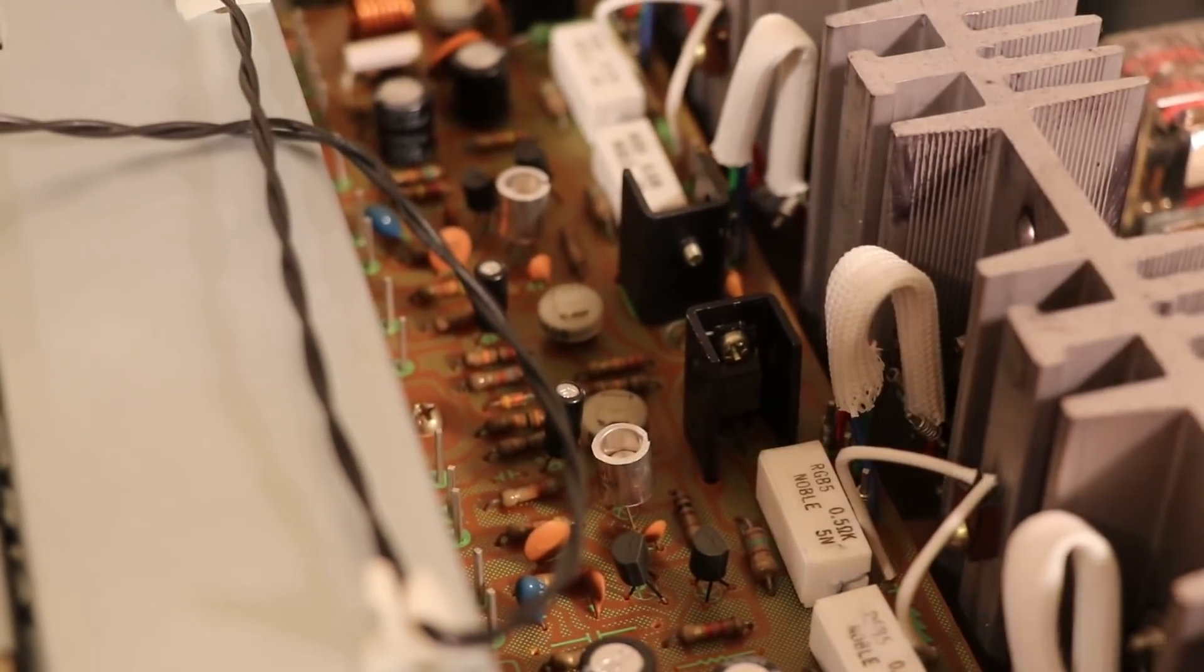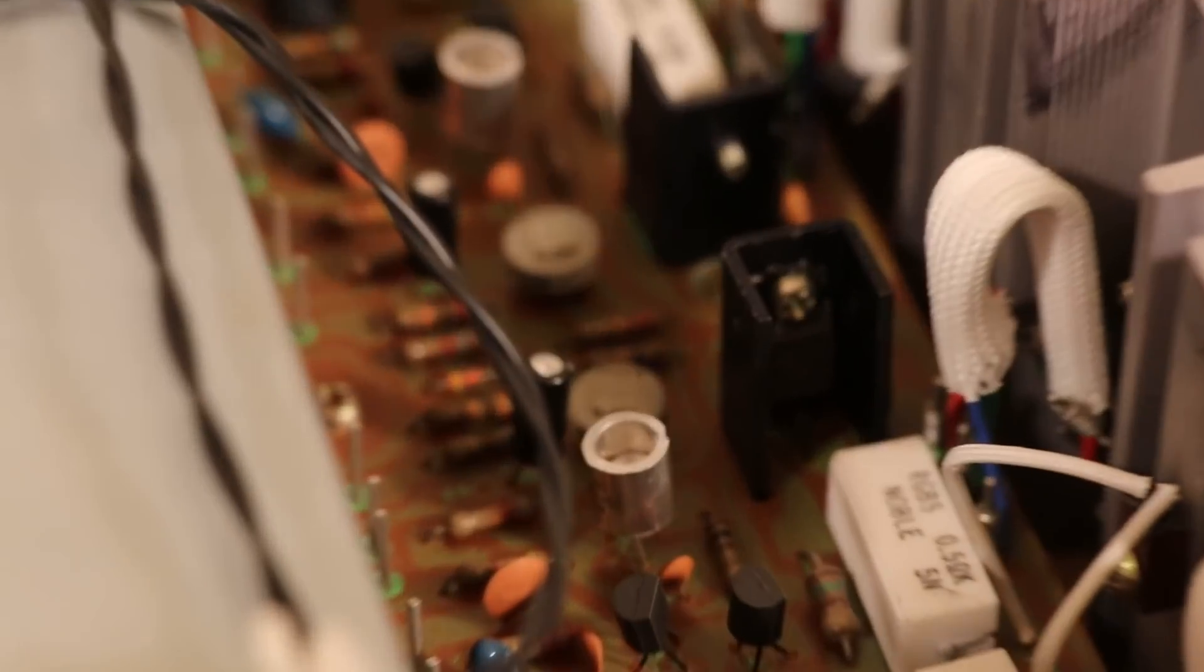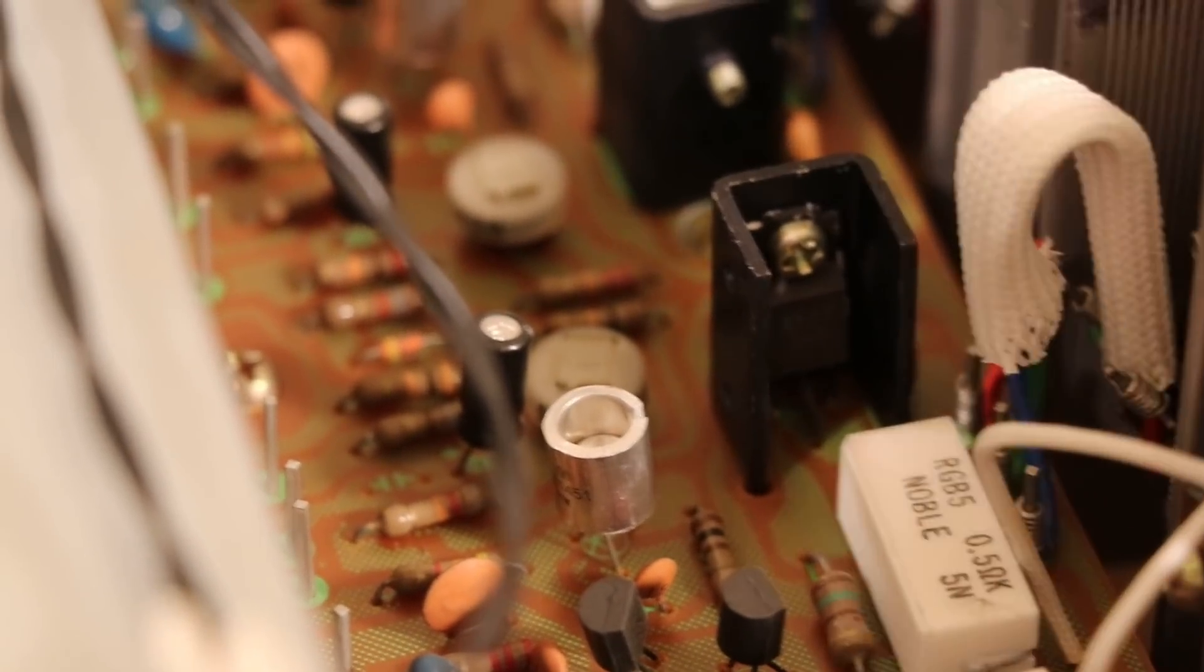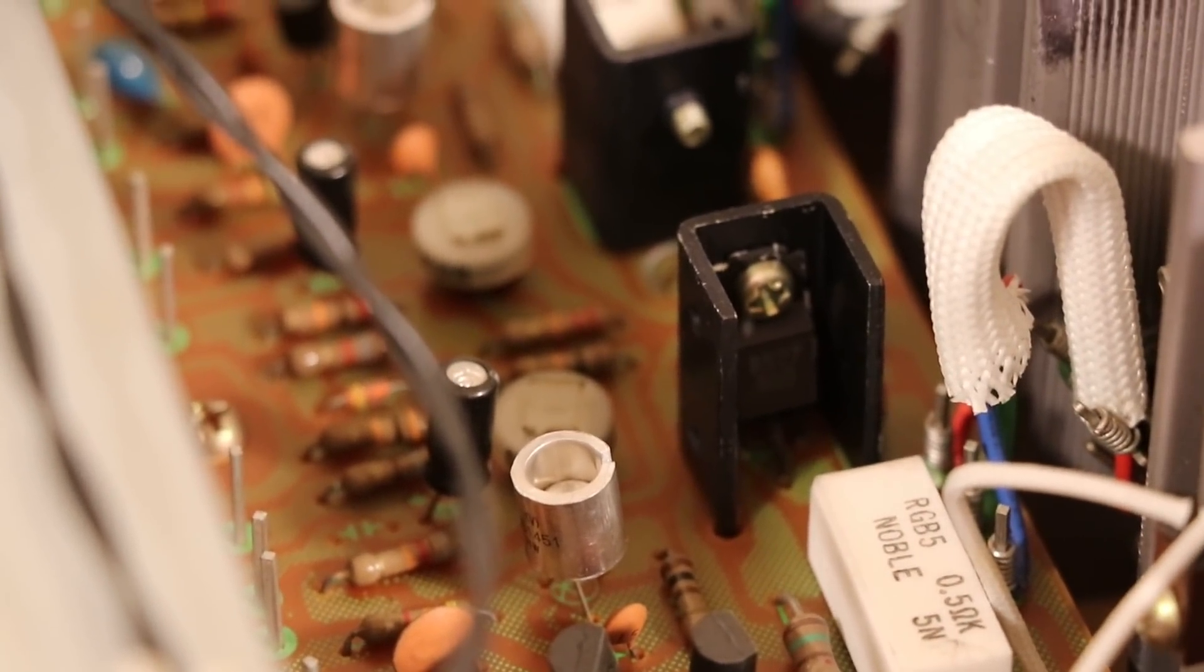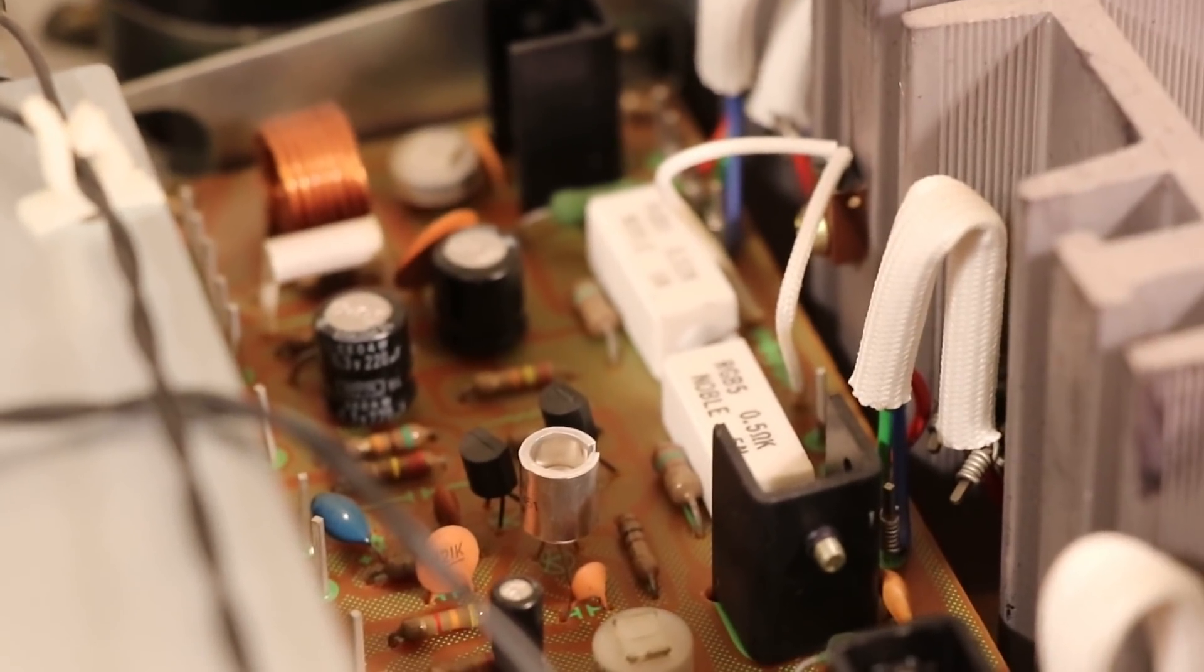The 2SC1451 transistor is that. It's that little silver cylinder looking thing. That's basically a heat sink on the transistor. And the body is inside of that little heat sink. There's another one over here for the left channel.